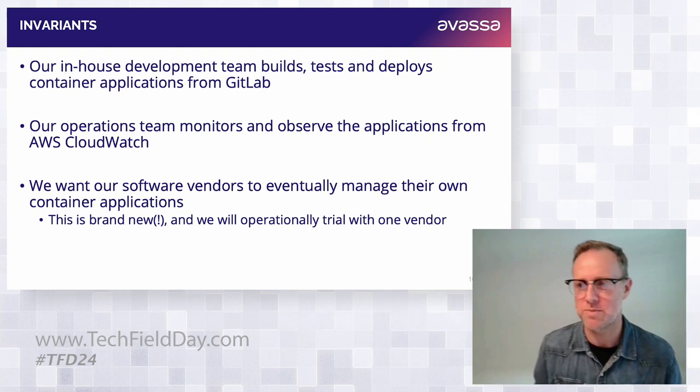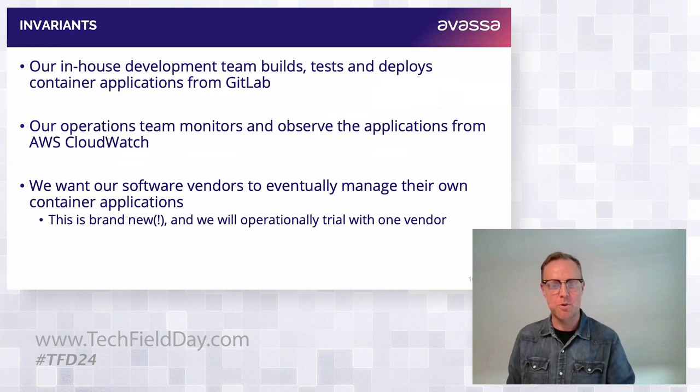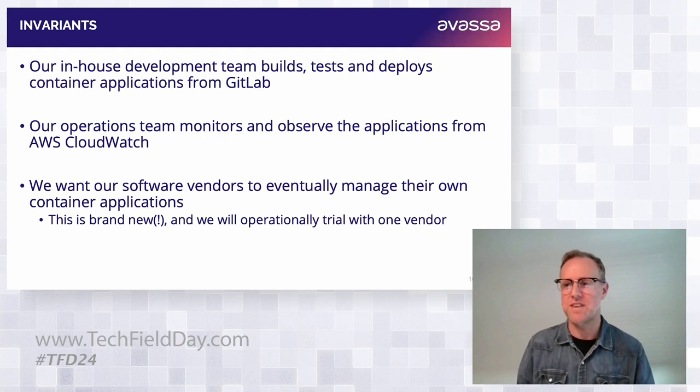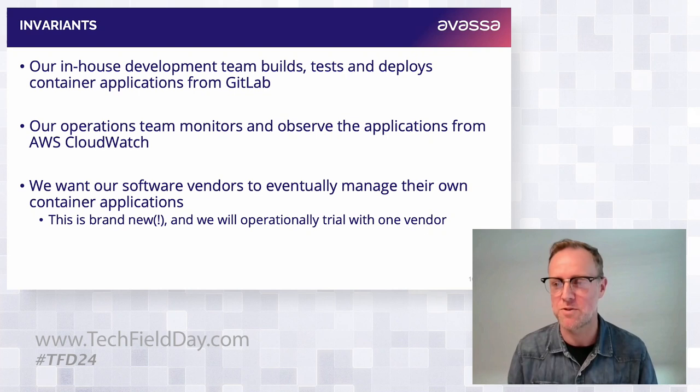There are three important things for us that really impact the way we need to think about this. Our in-house development team builds software components that need to run in our theaters — they live in GitLab, they build, test, and deploy container applications out of GitLab. We won't be able to convince them to do anything otherwise, since it works for deploying to the public cloud — so why couldn't we make this work towards the edge?